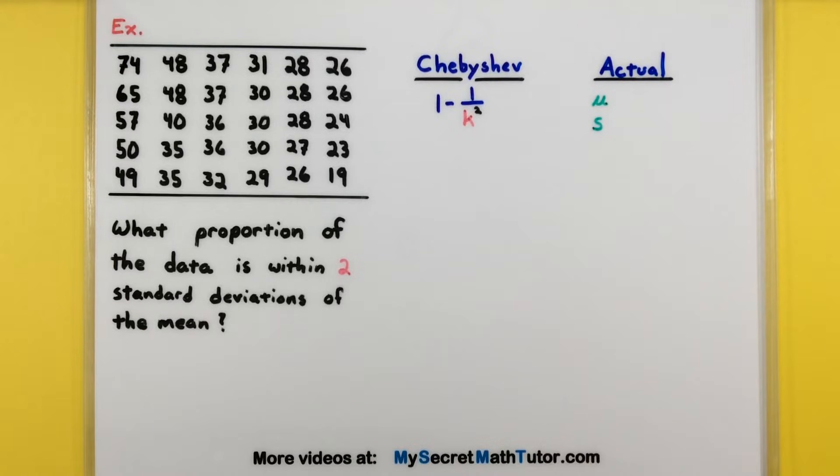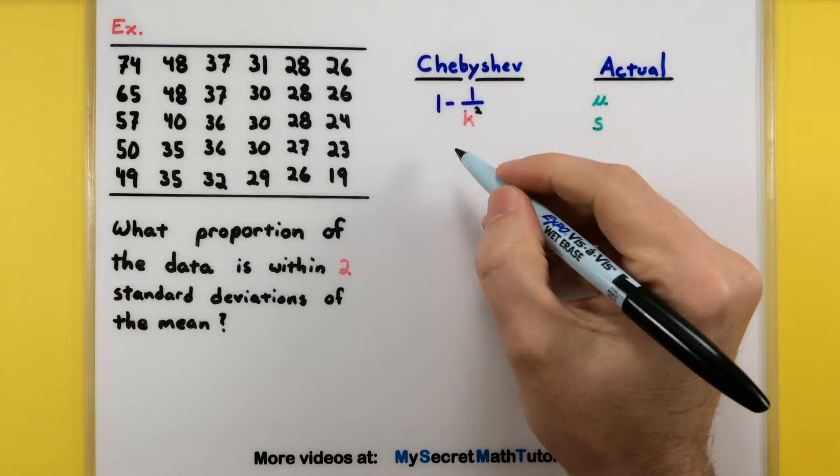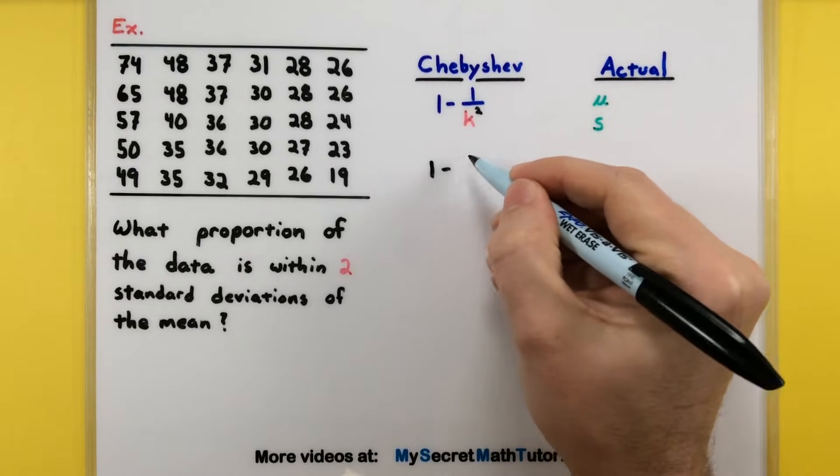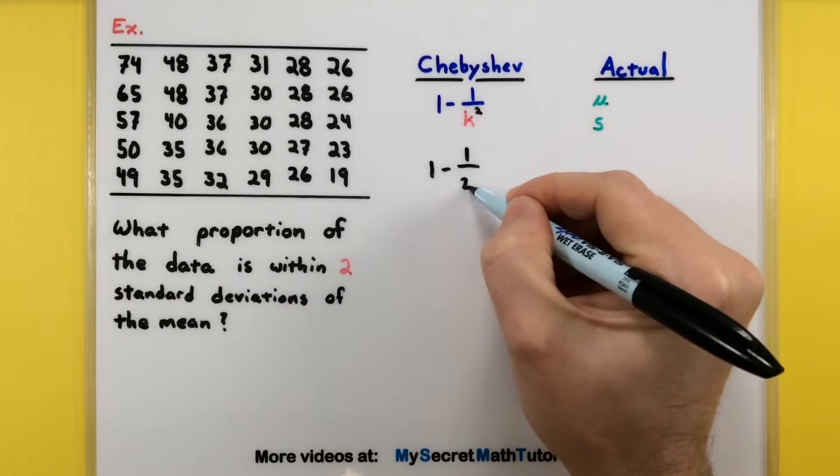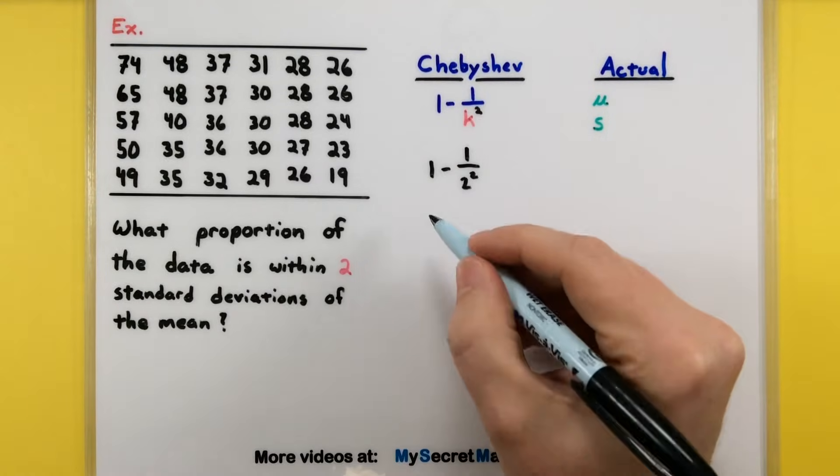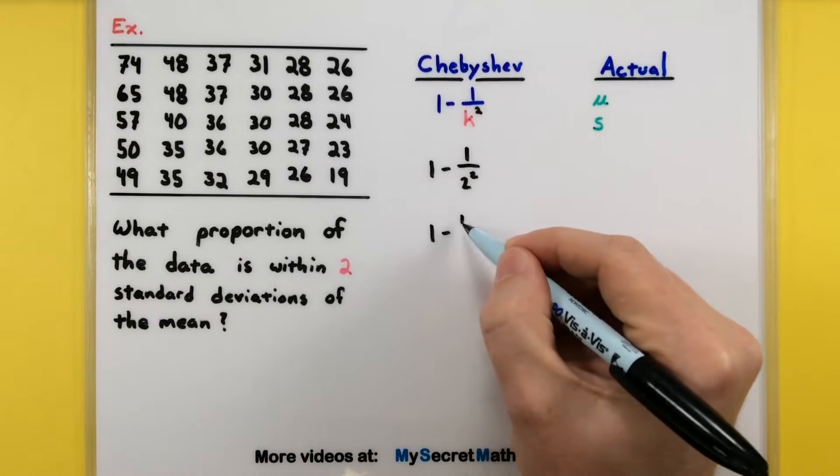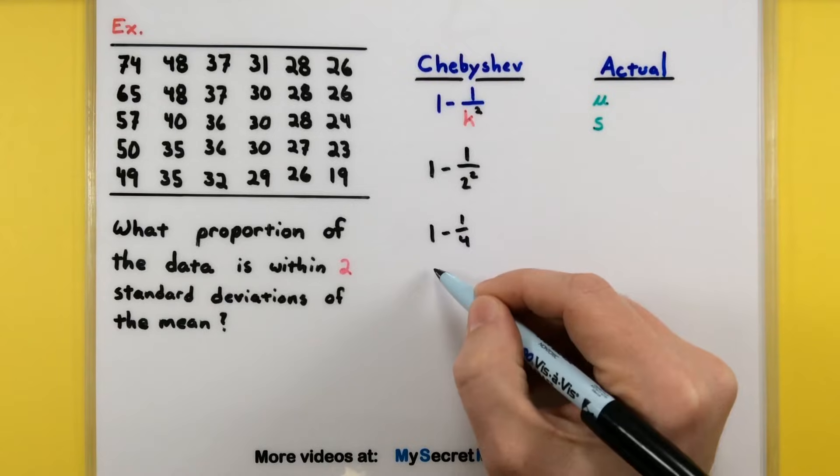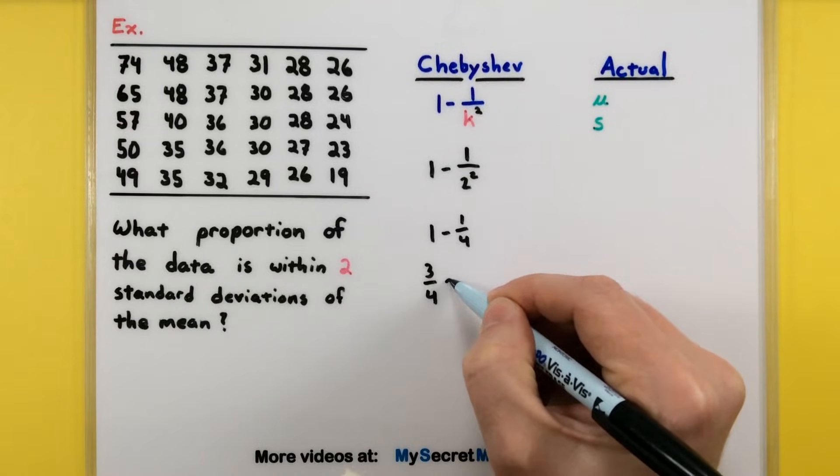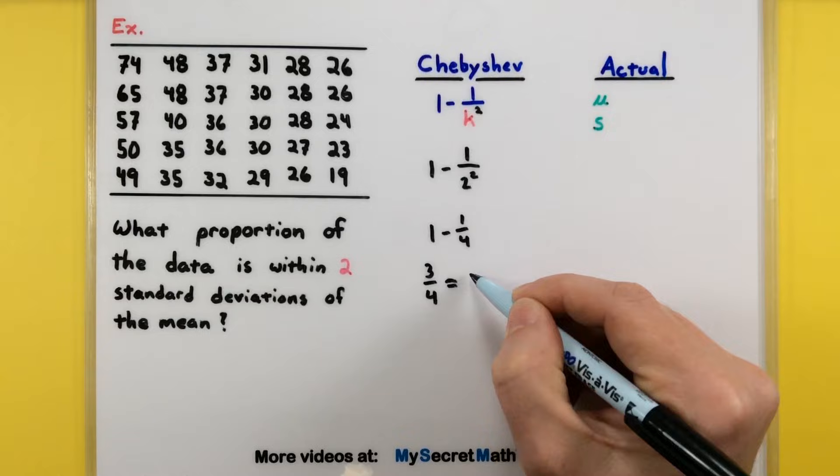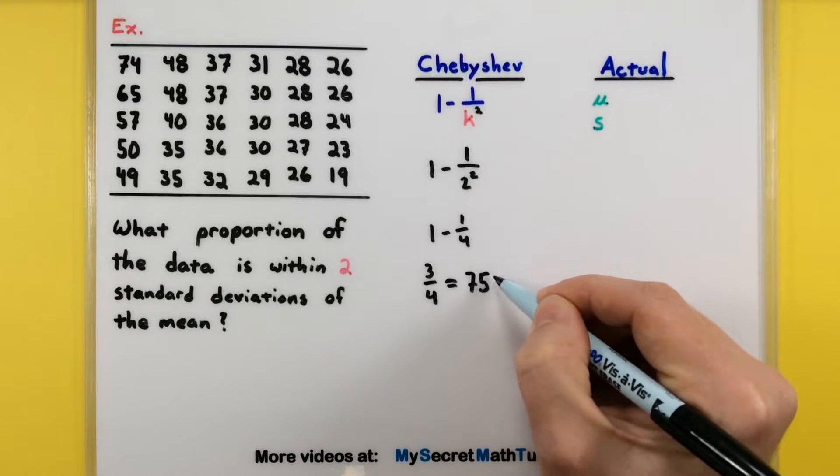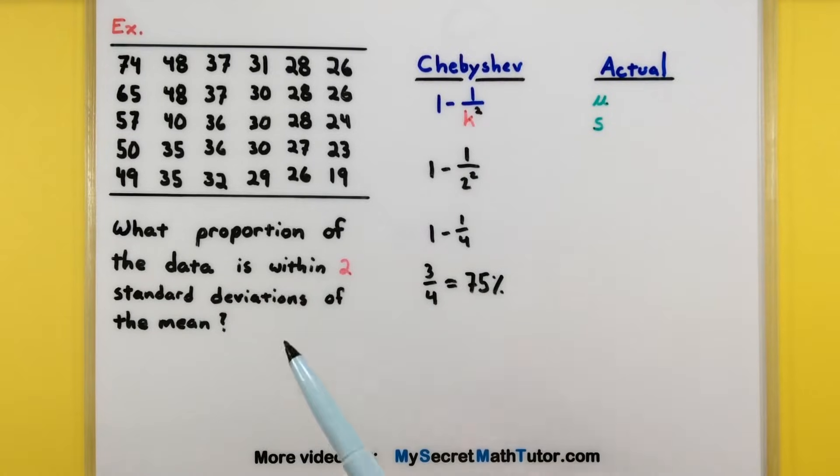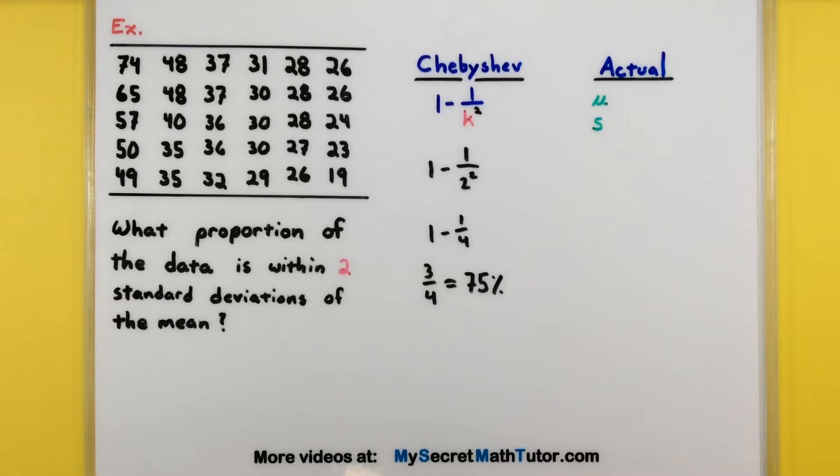So since this is all about Chebyshev's theorem we'll go ahead and start with that. So we'll simply say 1 minus 1 over 2 squared, that's the same as 1 minus 1 fourth, that's three fourths which is the same as 75%. So I really don't even have to do anything to the data and what it's saying is that at least 75% of my data is within two standard deviations of the mean.